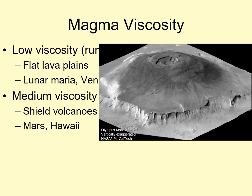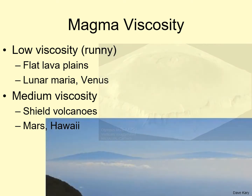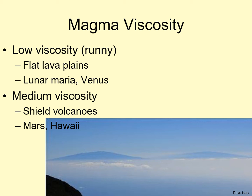However, the slope is so gentle that if you were standing on it, you might not even realize you were on a mountain at all. Similarly, here on Earth, the large volcanoes in Hawaii — Mauna Kea and Mauna Loa — are shield volcanoes. These are the tallest mountains on Earth when measured from their base, which is far below sea level at the bottom of the Pacific Ocean.